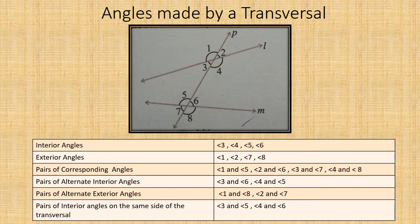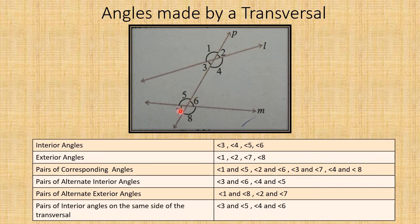Now let us learn about angles made by a transversal. Here in the diagram, line P is a transversal of lines L and M. At the top intersection point we get four angles: one, two, three, four. And at the bottom intersection point we also get four angles: five, six, seven, eight. So when a transversal intersects two lines, eight angles are formed. These eight angles are given different names — let us see what the different names are for these eight angles.